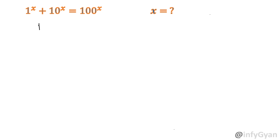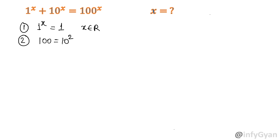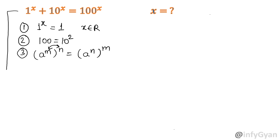Point number 1: 1 raised to the power x is equal to 1 for any real value of x — whether x is positive, negative, or 0, that value will be 1. Point number 2: 100 can be written as 10 squared. Point number 3: the exponent rule — a raised to the power m, power n can be written as a power n power m. We can change the position of exponents as per our need. I am going to apply all three points to this equation.